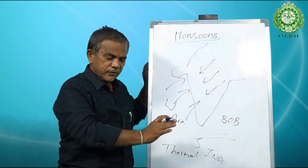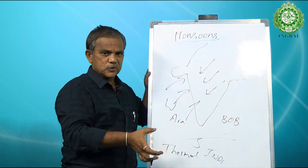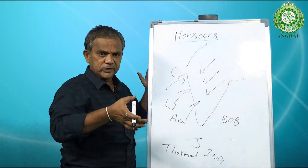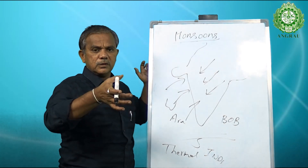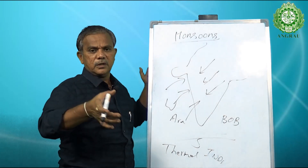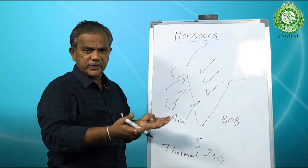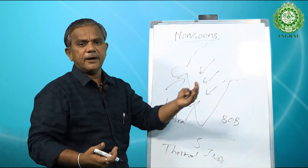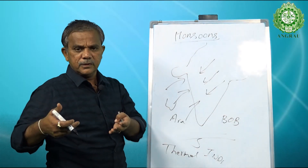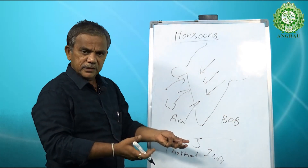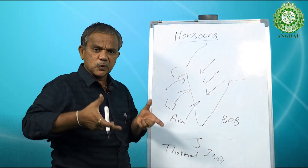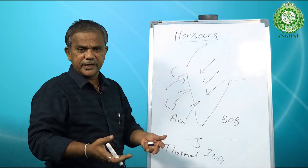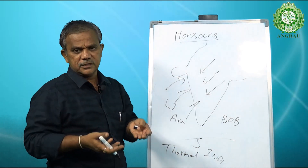After September 21st, even though the southern parts are becoming exposed to solar radiation, around the October 28th to November 1st fortnight, the entire surface of the Indian Ocean and Bay of Bengal gets heated up. Virtually, atmospheric pressure becomes lower from the tropospheric bottom layers all the way to the top layers.